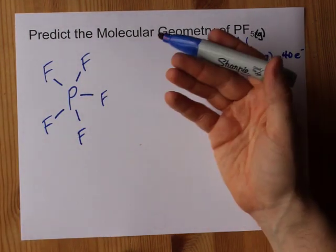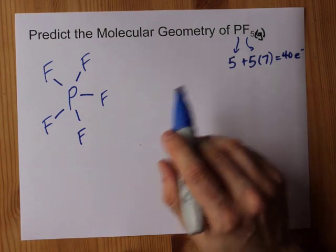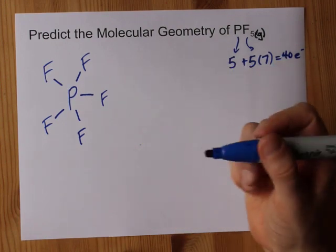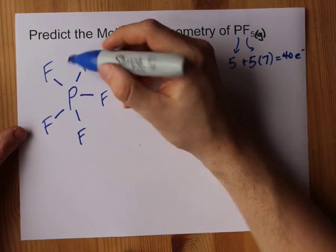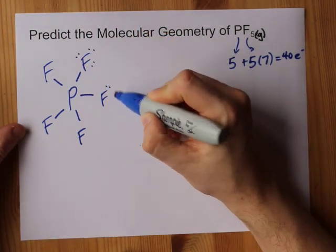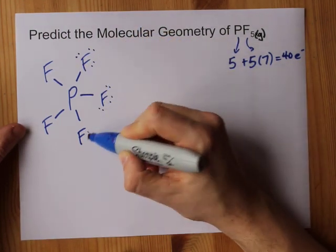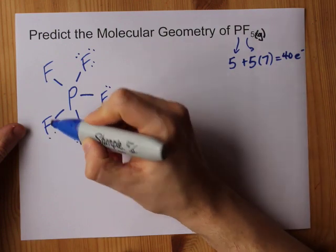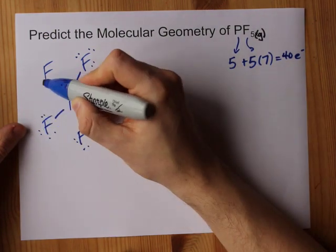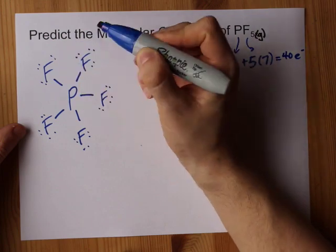Now, I'm going to complete the octet on the outer atoms until I get to 40 electrons total. This was 10, 12, 14, 16, 18, 20, 22, 24, 26, 28, 30, 32, 34, 36, 38, 40.